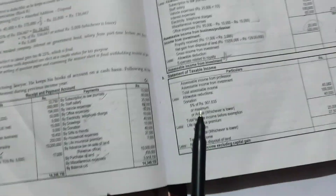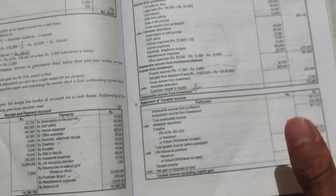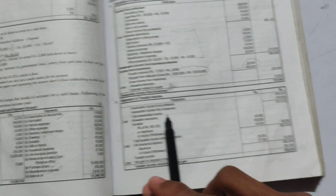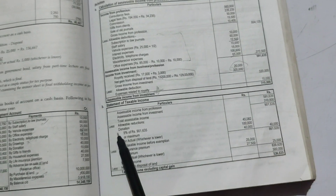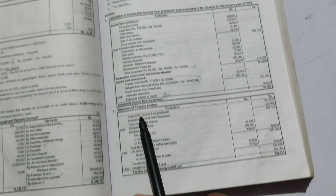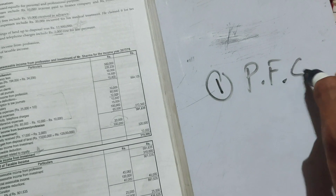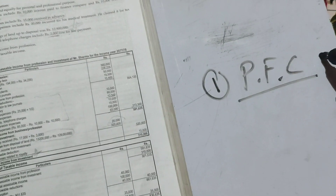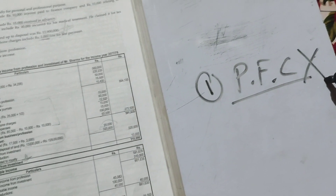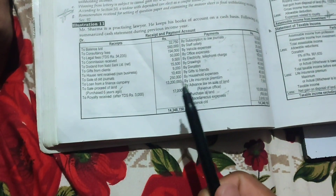Total accessible income is the sum of income from employment, income from business/profession, and income from investment. After arriving at total accessible income, we apply all available common reductions. These include provident fund contribution, and we note the employment co-income figure for reference in the common reductions calculation.